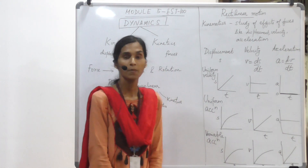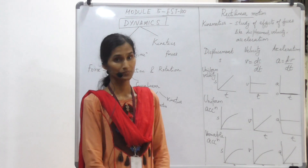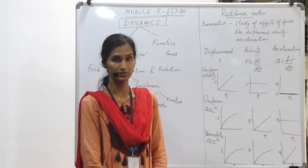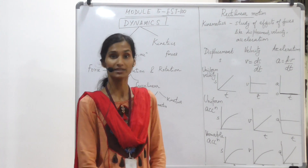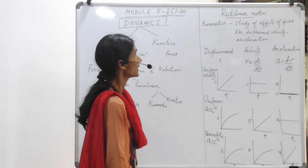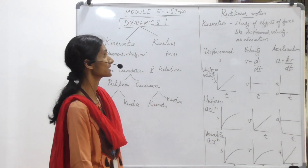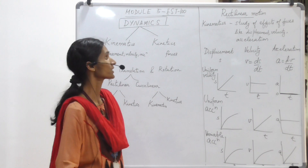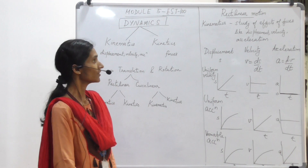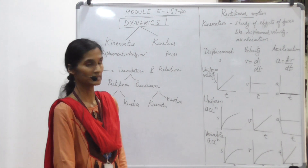Rectilinear motion is the branch which deals with the motion of a body in a straight line. When the path traversed by the body is a straight line, we call it rectilinear motion, or in other words, motion in a straight line. Kinematics is the first part of the motion we will study, examining the effects of forces like displacement, velocity, and acceleration — without considering the forces themselves.